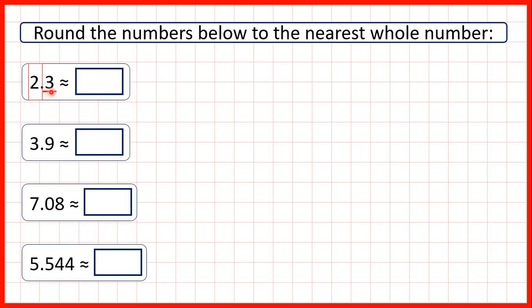We can see that 3 is less than 5, which means that we're rounding down. That means the 2 stays the same, so our answer is 2. 2.3 to the nearest whole number is 2.